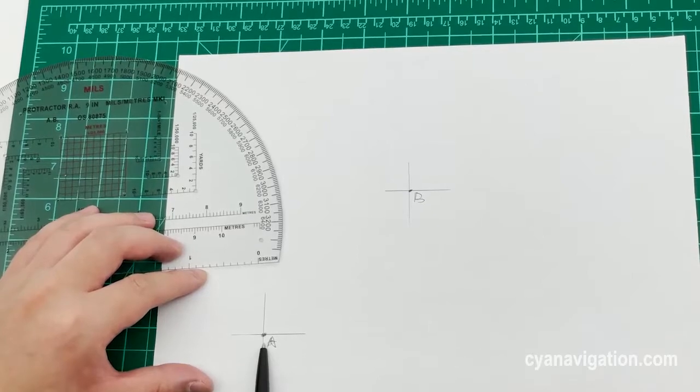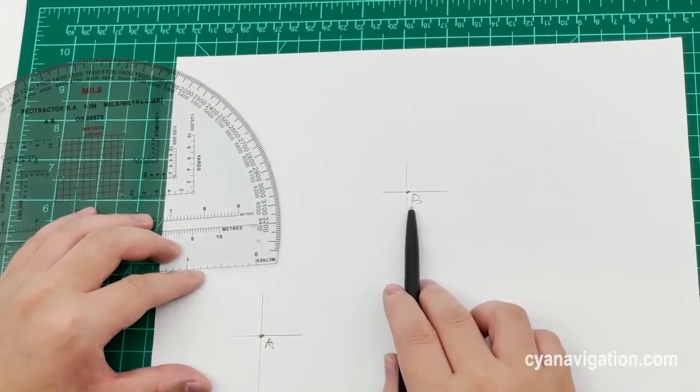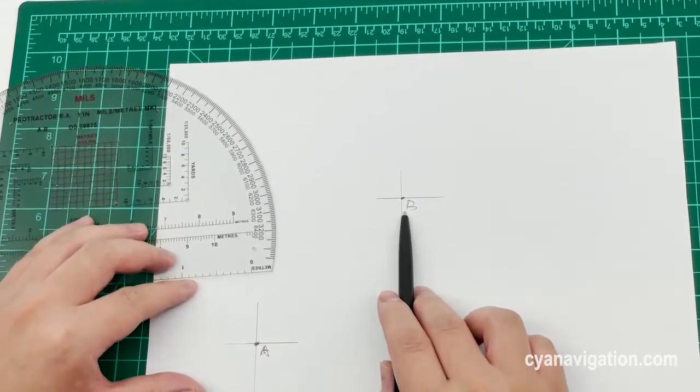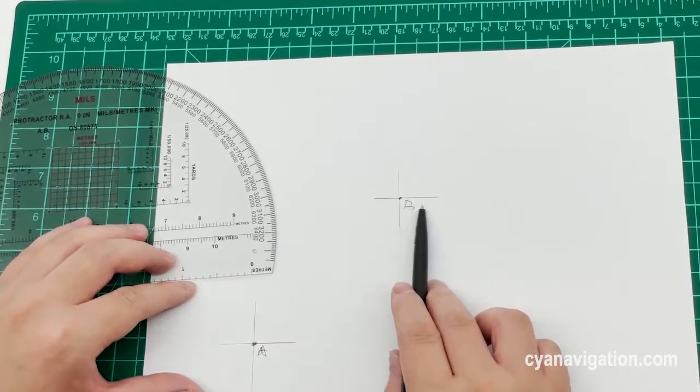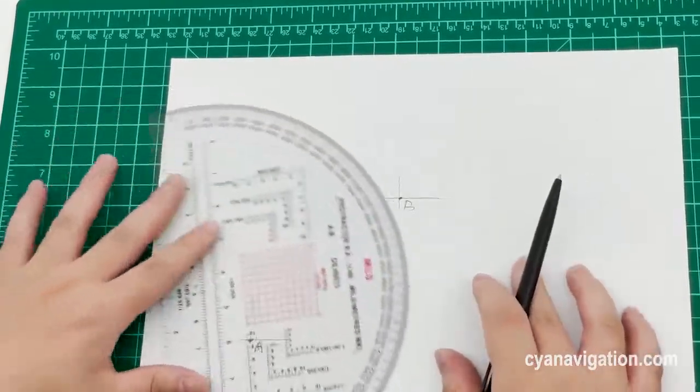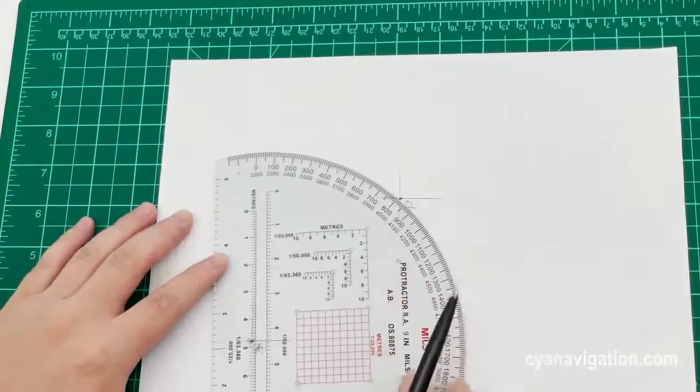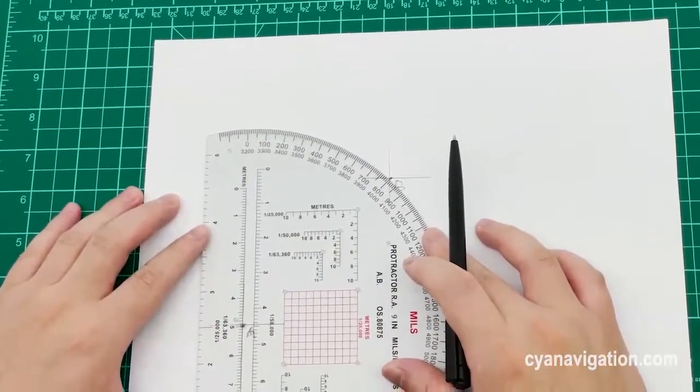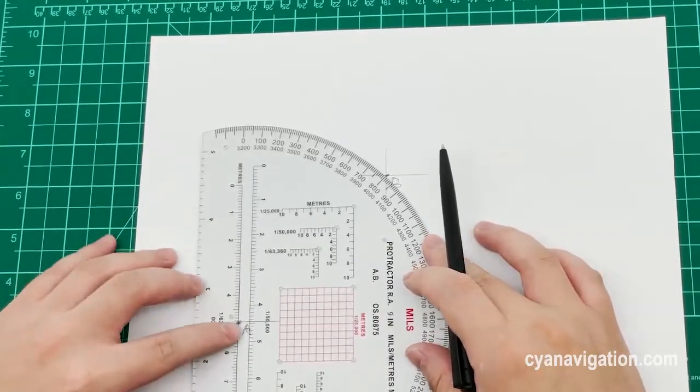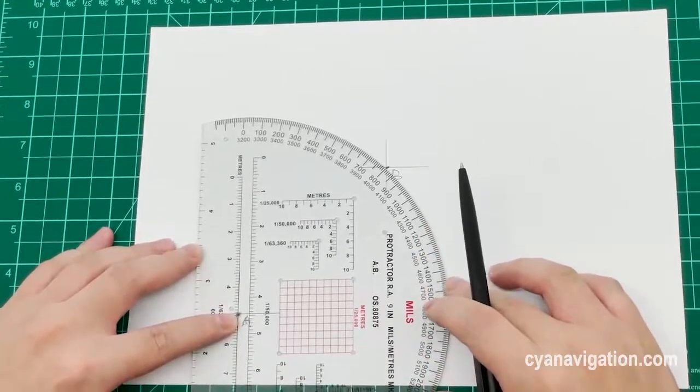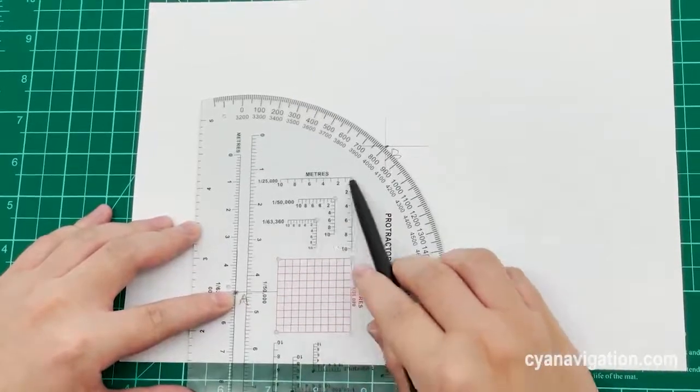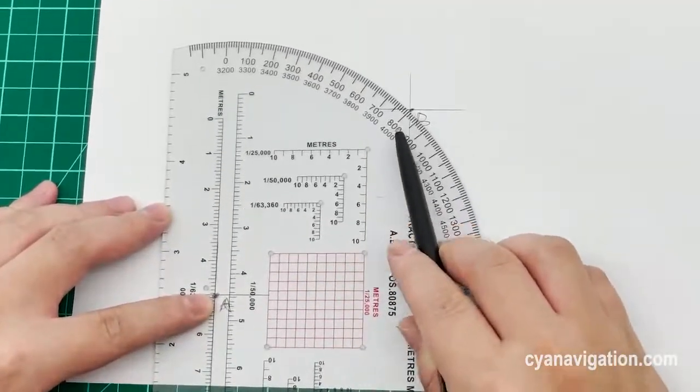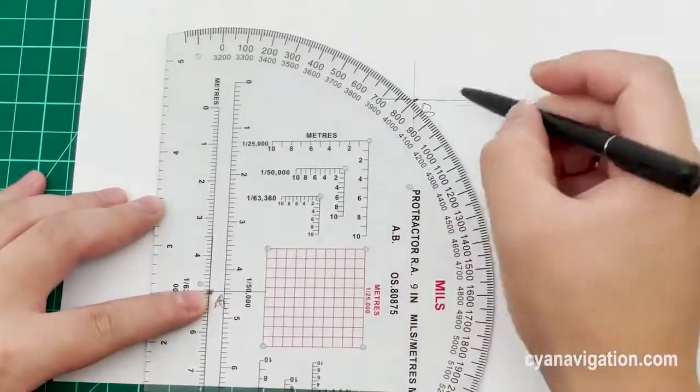We are using this protractor, fixing it to the central point and raising it to this point, and we read here it is 800.